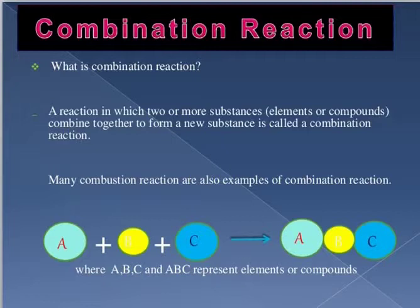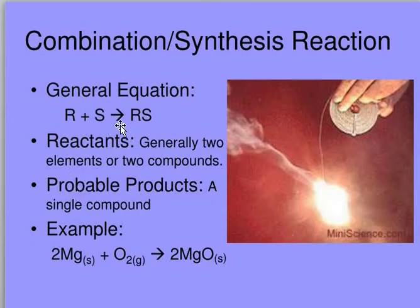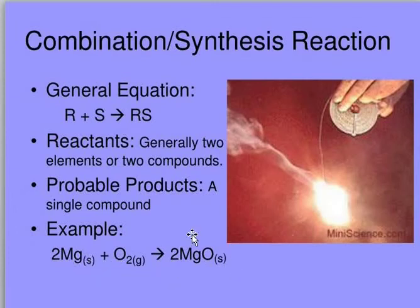For example, A plus B gives AB, and if you add three elements A plus B plus C, you get ABC — this is the combined form, known as a combination reaction. The general formula is: R plus R gives a single product. The reactants are generally two elements or two compounds. For example, magnesium plus oxygen gives magnesium oxide — two different elements combine to form one compound.